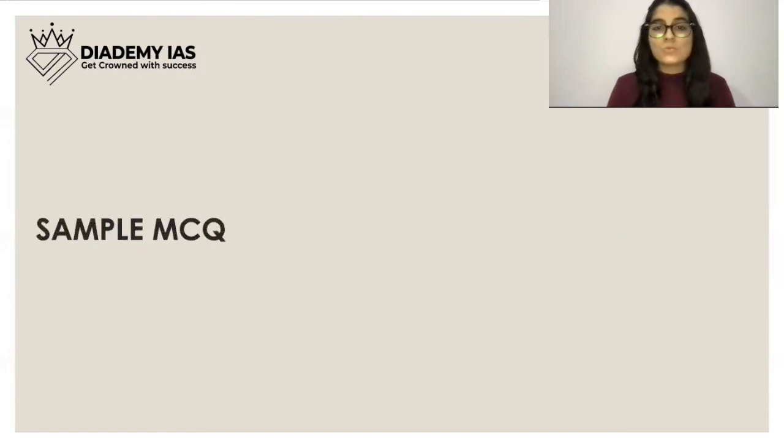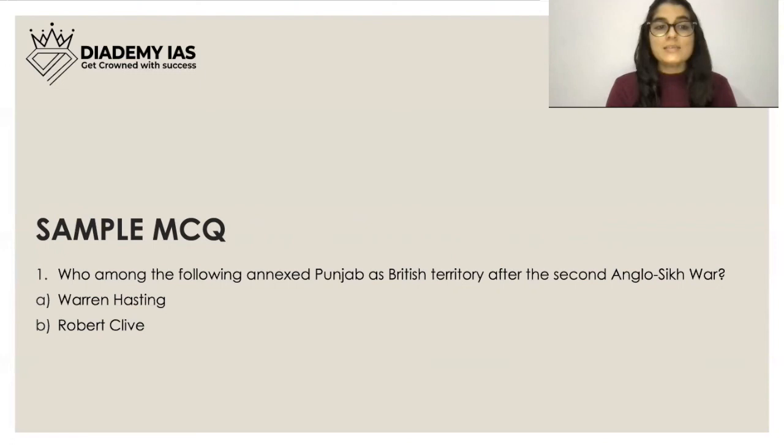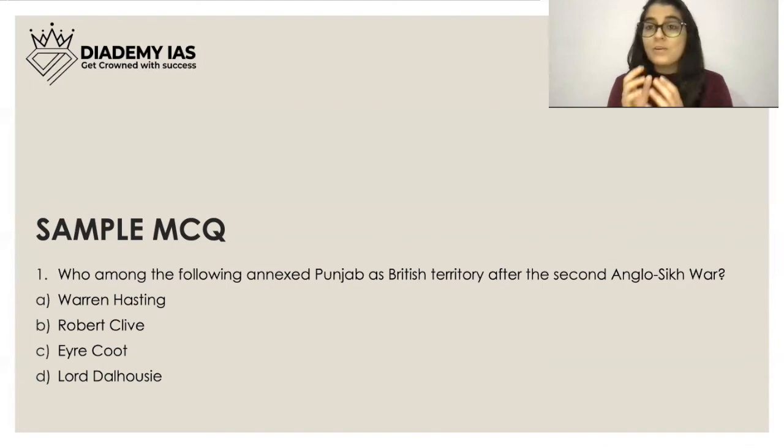Sample MCQ: Who among the following annexed Punjab as British territory after the Second Anglo-Sikh War? Options: Warren Hastings, Robert Clive, Eyre Coote, or Lord Dalhousie. The answer is Lord Dalhousie, who was Governor-General of India when Punjab was annexed after the Second Anglo-Sikh War. This was all about the two Anglo-Sikh Wars — thank you very much.